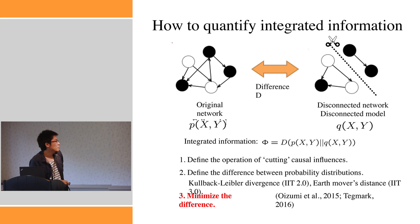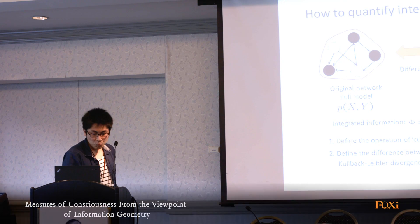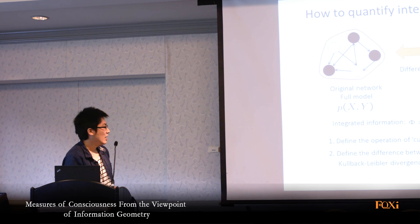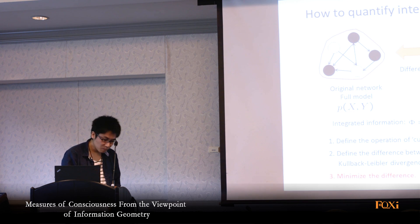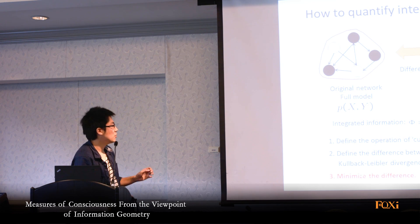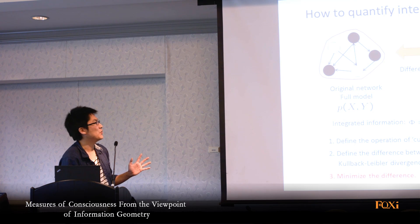In previous versions of IIT, the well-known Kullback-Leibler divergence was used, which is easy to analyze. We have since changed this difference to an Earth mover's distance, which we believe is probably better for understanding consciousness. There are some options for measuring the difference between probability distributions, but in my talk I use the KL divergence for ease of explanation. The most important contribution of my work is that we also minimize the difference between P and Q, corresponding to finding the best approximation of P using this disconnected model Q. Marx also proposed this minimization operation for defining integrated information.